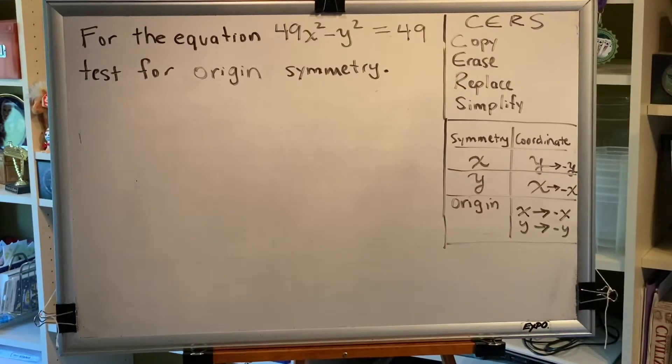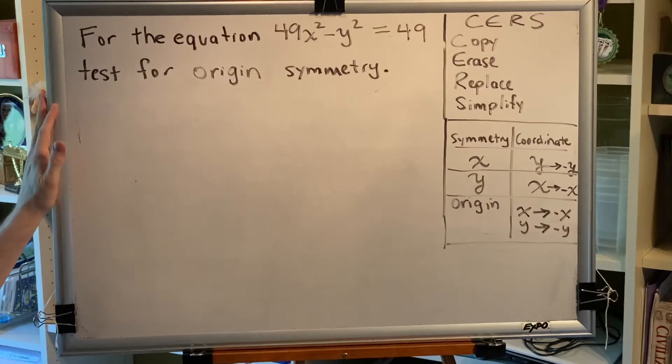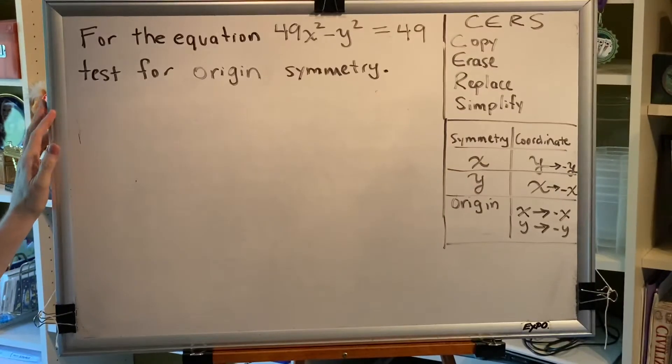The topic of this video is determining symmetry with respect to the x-axis, y-axis, and the origin. Let's look at a problem. For the equation 49x squared minus y squared equals 49, test for origin symmetry.